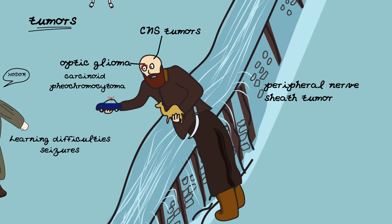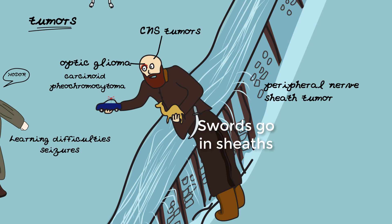Moving on to tumors: the giant white walker has been depicted as the tumor diagram, because tumors increase in size and the white walker is huge. The tumors mainly involved are optic glioma, which is also one of the diagnostic criteria, and CNS tumors. If you look on his belt, he has a sword, which refers to peripheral nerve sheath tumors.